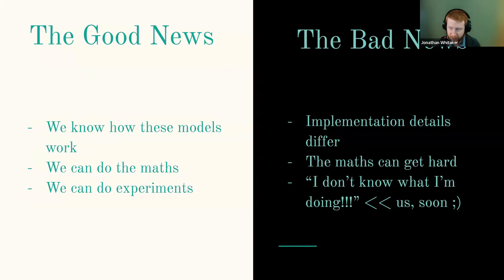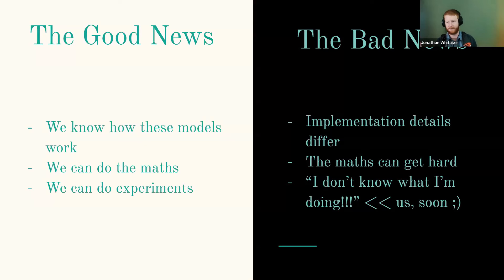The good news for this talk: we understand how these models work — not in terms of how they learn things (that's still quite an open question), but at least in how they produce an answer. We have known mathematical operations and known transforms of the data; we put the data through these operations and get an output. The bad news is it's never as simple as you think. The paper might differ from the code, which might differ from the Hugging Face implementation.